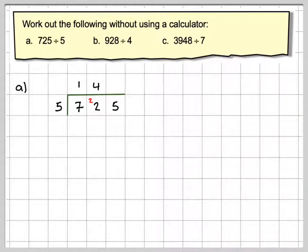And how many are left over? It's 2 again. So we'll write the little 2 here. And then 5s into 25 will be 5. So we can say 725 divided by 5 is equal to 145.